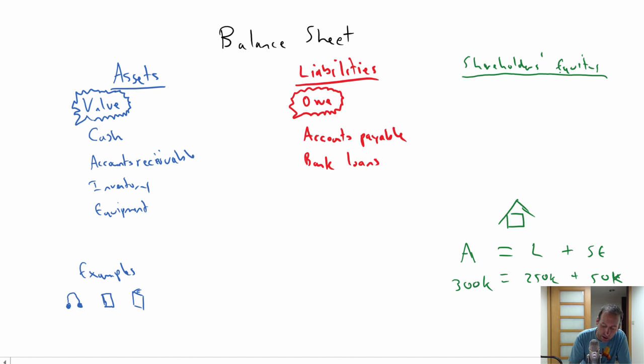And the formula is assets equals liabilities plus shareholders' equity. So in the case of my house, I have a $300,000 house, $250,000 in debt. My piece of the house is just $50,000. And the same is true for companies. In a company, assets equals liabilities plus shareholders' equity.